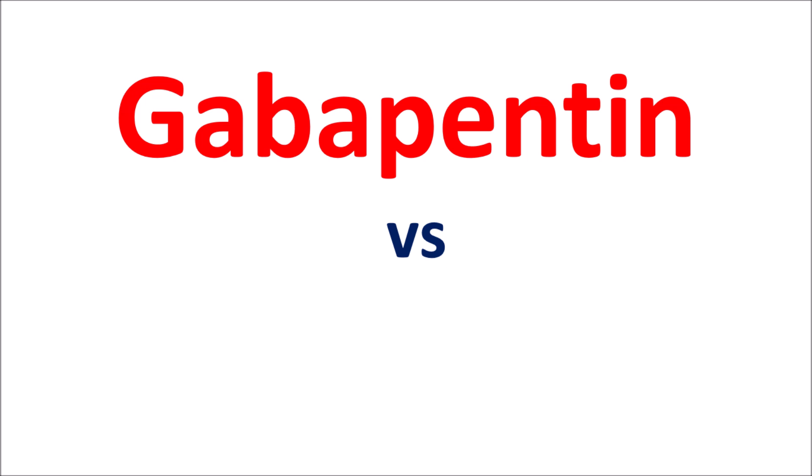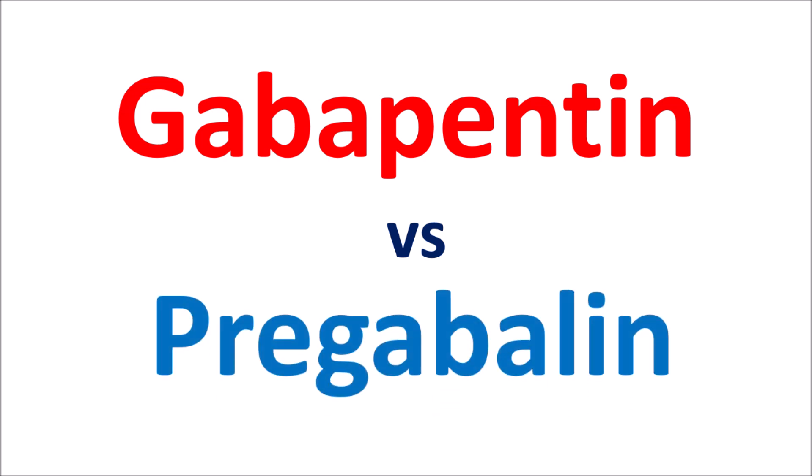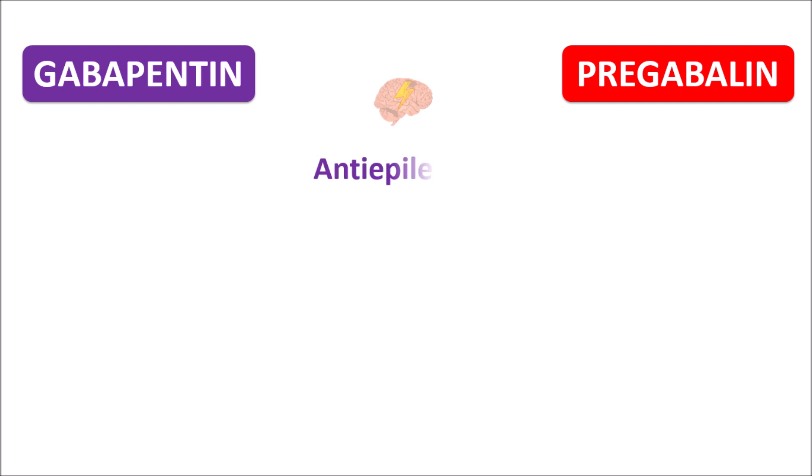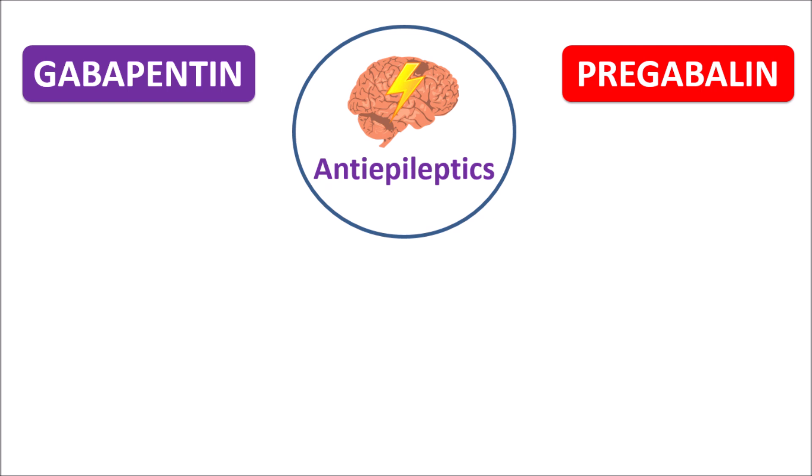Hi everyone. In this video, let us discuss Gabapentin versus Pregabalin. Gabapentin as well as Pregabalin both belong to the same category and are classified as anti-epileptic agents. Both of these drugs can be used in the treatment of partial onset seizures, but still these two drugs are not equivalent.